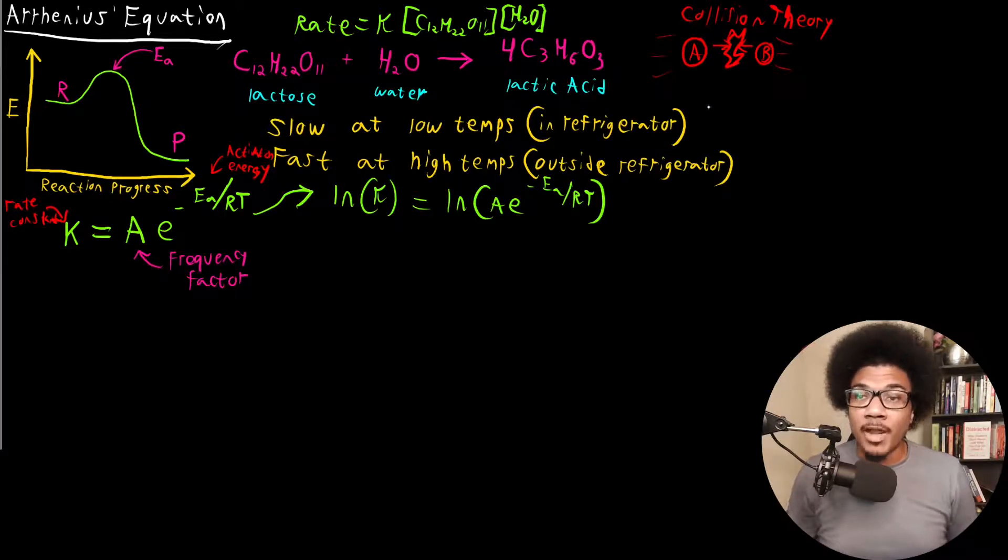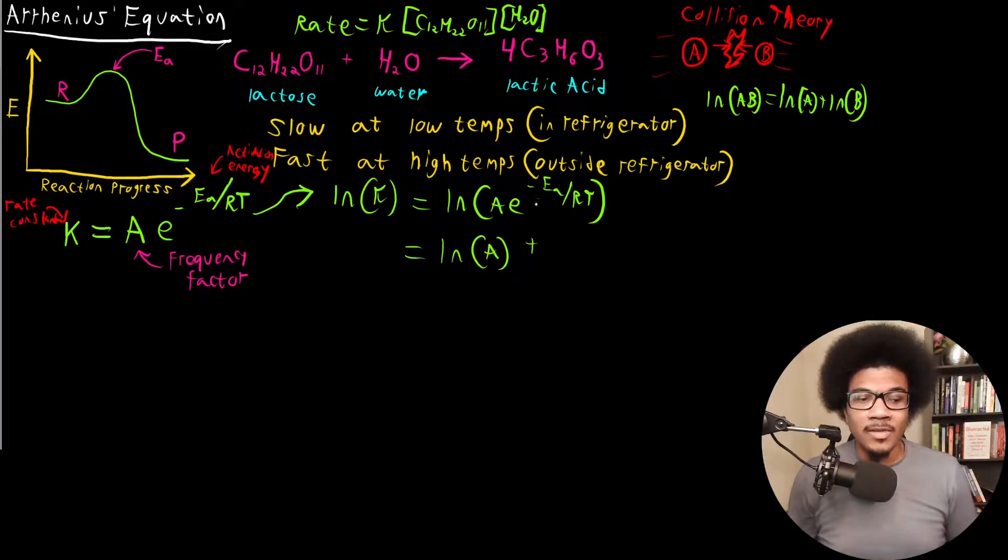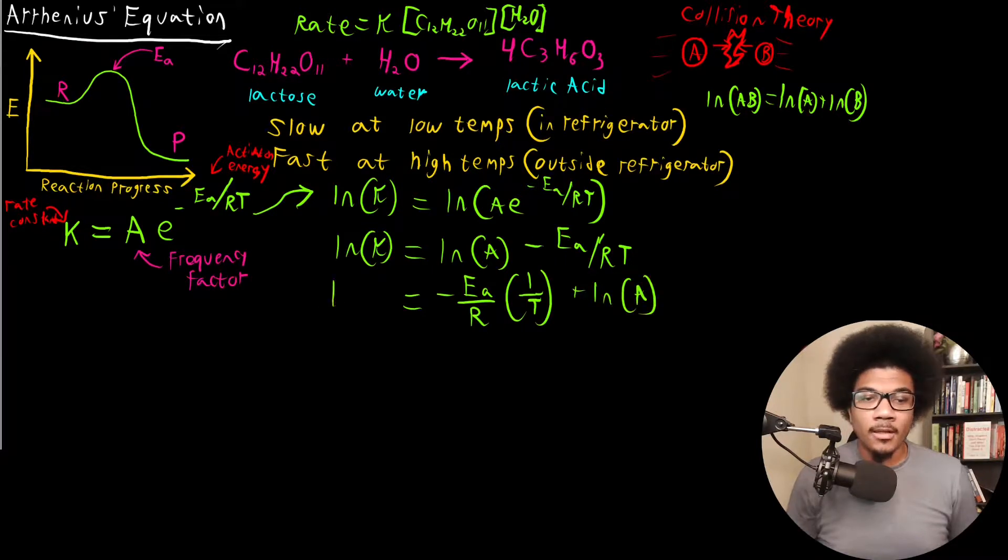One thing that I want to do here is use a property of natural logs. There's a property of natural logs where if you have the natural log of A times B, that can be rewritten as natural log of A plus the natural log of B. So what we can do is break this guy up and say we got the natural log of the frequency factor plus this guy. When you take the natural log of an exponential, all that stuff just comes down. So we got negative E sub A over RT. So now I'm going to just re-express this in the following way: negative E sub A over R times one over T plus ln A equals ln K.